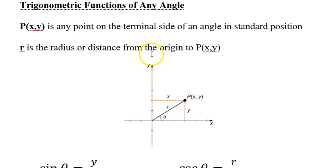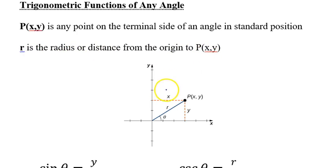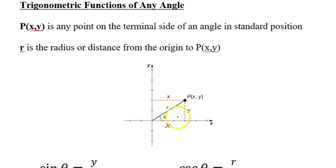Next we'll talk about trig functions of any angle. We introduce a point P(x, y) on the terminal side of the angle in standard position, and r, the radius or distance from the origin to that point. The point P is where you've gone over x and up y, and r is the distance from the origin to that point — like the radius of a circle.